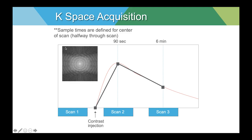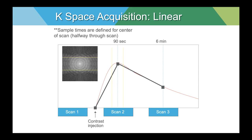Most k-space is acquired in a linear fashion, beginning at the top and slowly adding data line by line through to the bottom. In that case, during the middle of the scan we will acquire the contrast data. So for a three-minute scan, it is the middle minute that requires the contrast information. That informs our delay — we should center that middle minute at the peak enhancement to optimize the contrast difference between normal and neoplastic tissue.